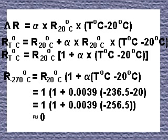If the temperature of a wire is increased to some temperature T degrees centigrade, then the increase in resistance at that temperature can be expressed as ΔR = α × R₂₀°C × (T°C - 20°C).